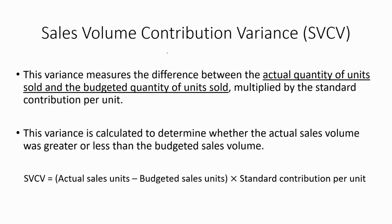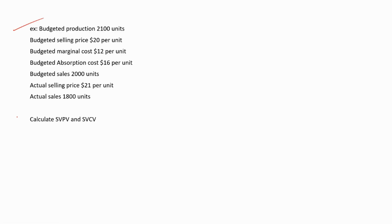Now let's discuss about the sales volume contribution variance, denoted by SVCV. This variance measures the difference between the actual quantity of units sold and the budgeted quantity of units sold, multiplied by the standard contribution per unit. It is calculated to determine whether actual sales volume was greater or less than budgeted. The formula is: SVCV = (Actual sales units − Budgeted sales units) × Standard contribution per unit.